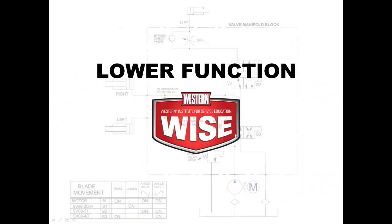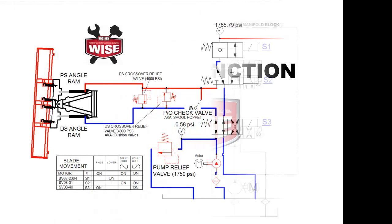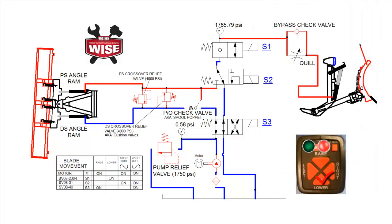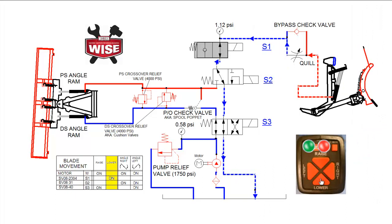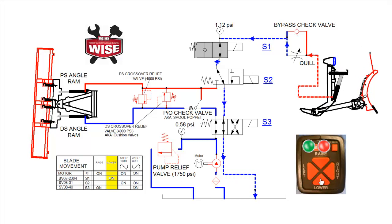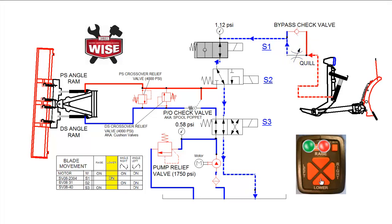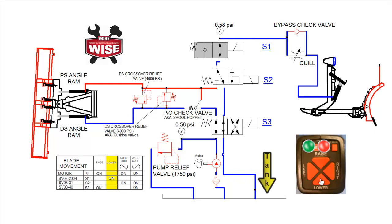We will now demonstrate the lower function. Pressing the lower button on the cab control activates the S1 valve. The weight of the plow collapses the lift ram, forcing hydraulic fluid through the quill, through the shifted S1 valve, the unshifted S2 and S3 valves, and back to tank. The quill can be adjusted by turning it clockwise, slowing the drop rate of the plow.